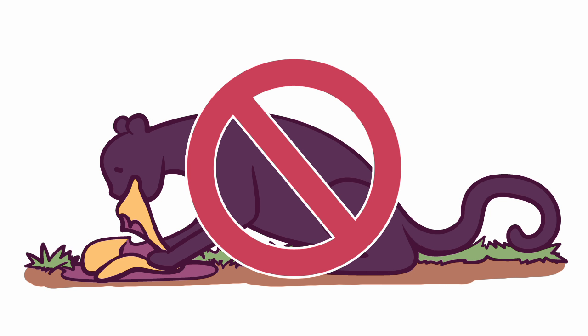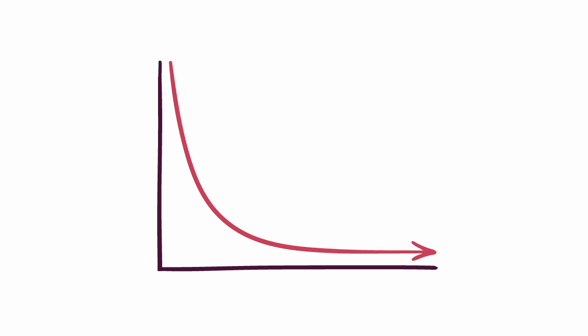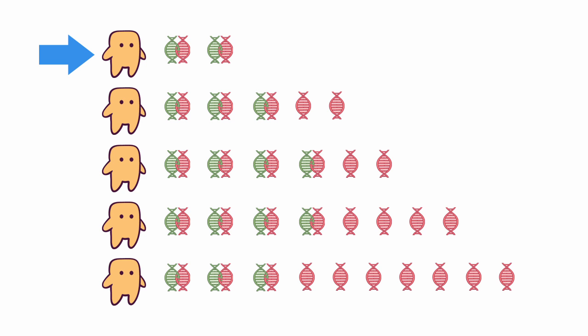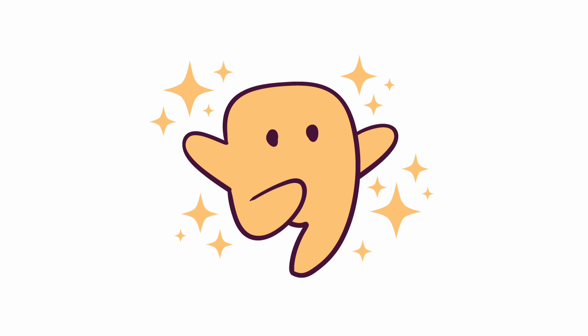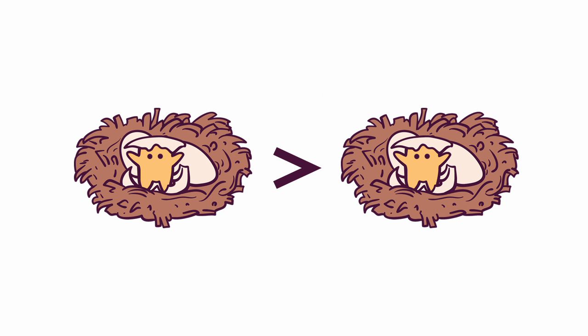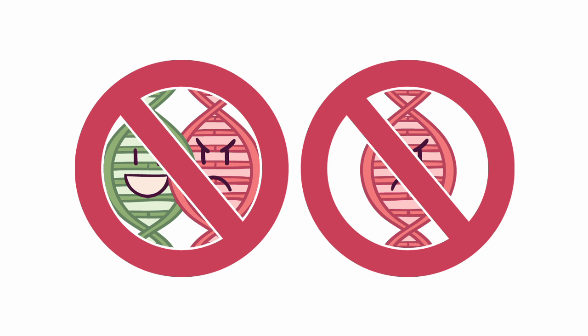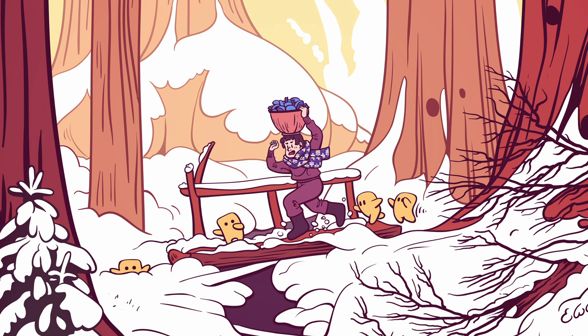But of course, if all the predators disappear from the environment these creatures inhabit and food becomes plentiful, then the likelihood of death from external causes will decrease significantly. The individuals who have fewer harmful mutations will have an advantage, as they will be able to stay alive and healthy for much longer and lay many more clutches of eggs than ever before. Their offspring will finally be able to outnumber everybody else's and produce even more offspring of their own. And after many thousands of generations, the harmful mutations will disappear from the population, and healthy 1000-year-olds will appear once again.